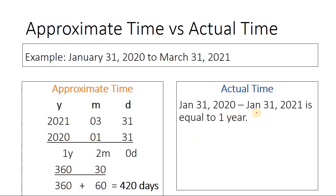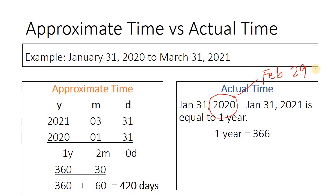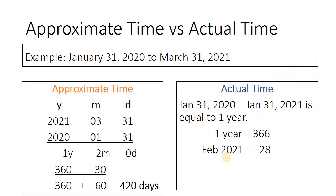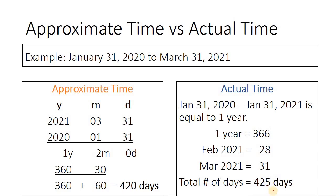For the actual time, notice that January 31st, 2020 up to January 31st, 2021 is equal to 1 year. One year is equal to 366 days because the year 2020 is actually a leap year, meaning February has 29 days. So we've covered up to January 31st, 2021. The month of February 2021 has a remaining 28 days, and the month of March up to 31st, 2021 has 31 days. Taking the summation — 366 plus 28 plus 31 — gives a total of 425 days. That's the perspective of approximate time and actual time.